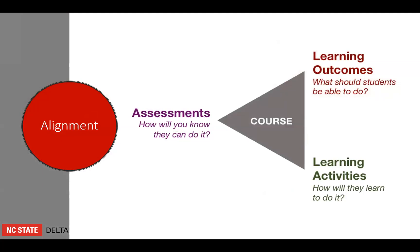Regardless of how you plan for and encourage student-content interaction — either through advanced organizers, self-assessments, or breaking up content into digestible chunks — alignment with your module and course learning objectives is important for buy-in. Make sure that what you're asking your students to do, to watch or to read — in other words, their learning activities — helps them to achieve the learning objectives you stated in your course syllabus. Tell your students how their engagement with the material will help them achieve the learning outcomes of the course.